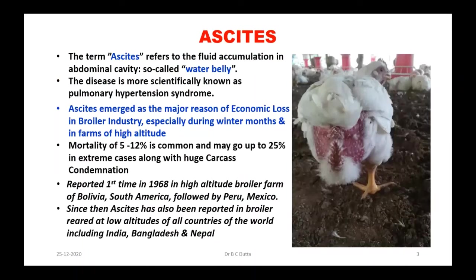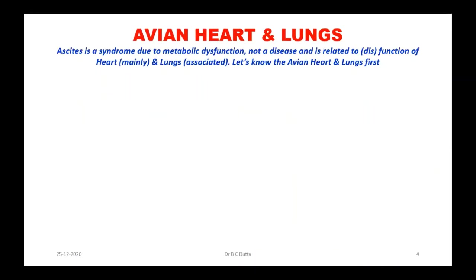It is pulmonary hypertension syndrome. Let us know about the avian heart and lungs. Ascites is a syndrome, a metabolic dysfunction. It is not a disease; it is related to the function of the heart and lungs.